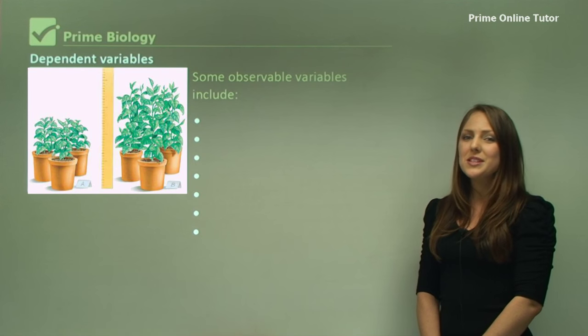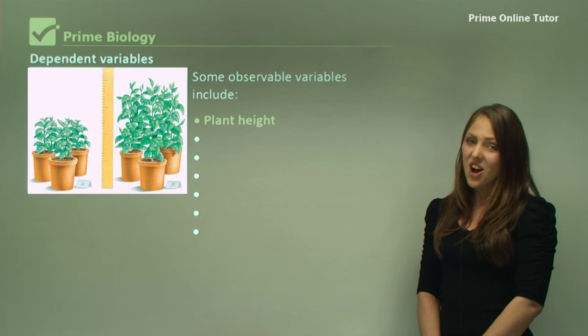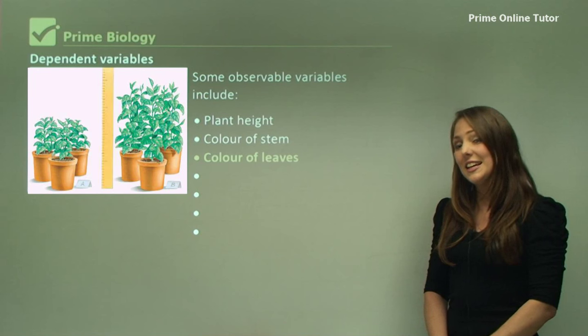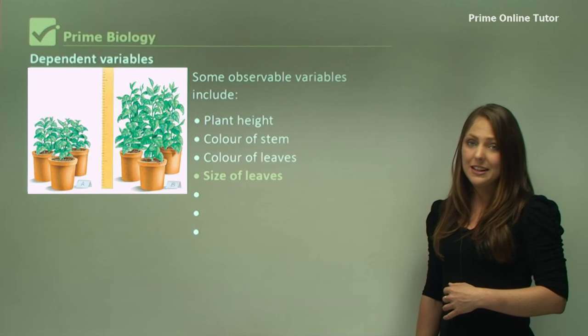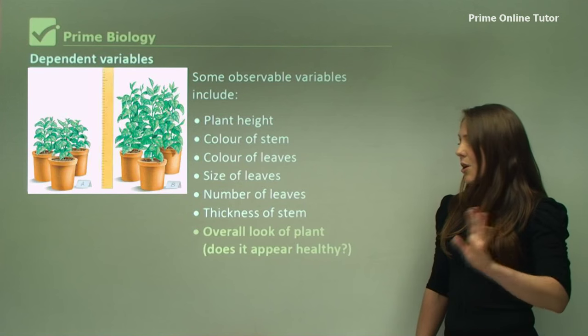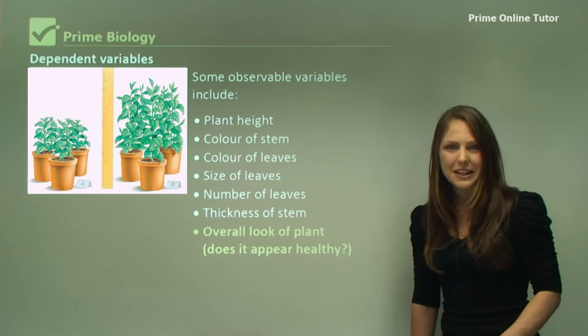Some observable variables include the plant height, the colour of the stem, the colour of the leaves, the size of the leaves, the number of leaves on the plant, the thickness of the stem, and the overall, how healthy does the plant look?